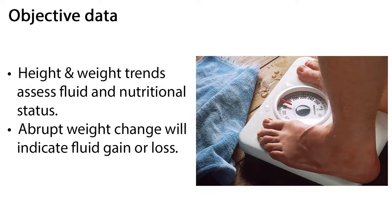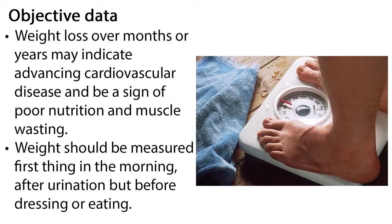It is important to gather accurate objective data, including vital signs and height and weight, which will provide valuable information about cardiovascular function. Height and weight trends assess fluid and nutritional status. Abrupt weight change will indicate fluid gain or loss, while weight loss over months or years may indicate advancing cardiovascular disease and be a sign of poor nutrition and muscle wasting. Weight should be measured first thing in the morning, after urination, but before dressing or eating.